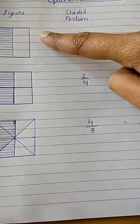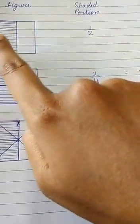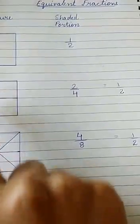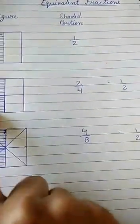In the first figure, the shaded portion denotes half of the figure. In the second figure, the shaded portion also denotes half of the figure.